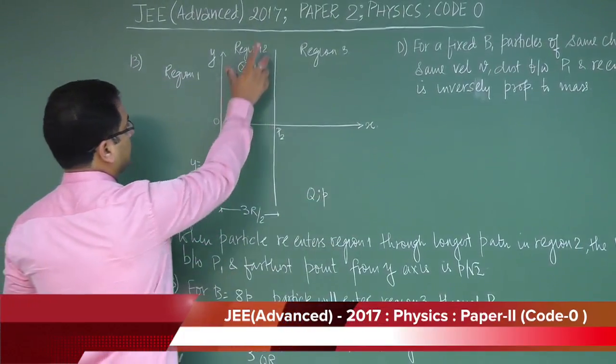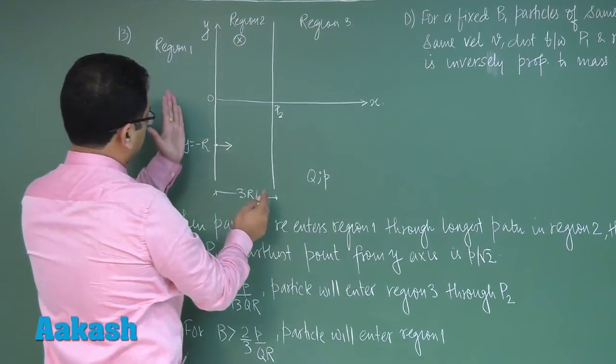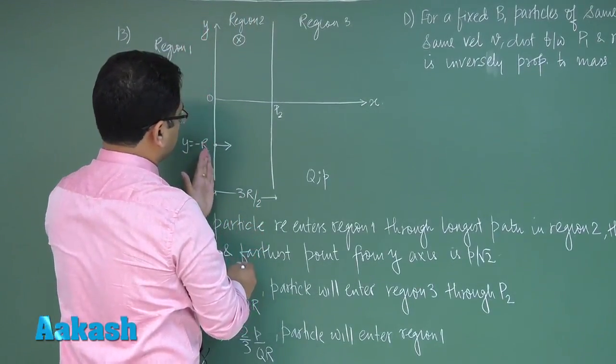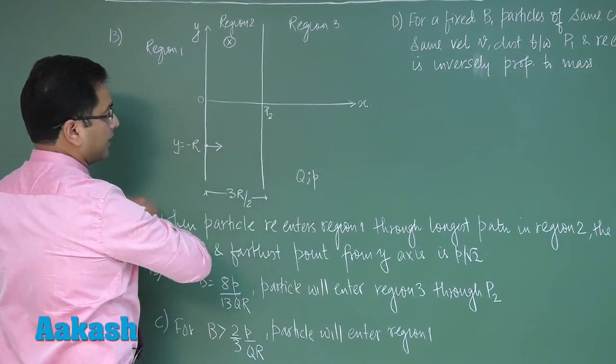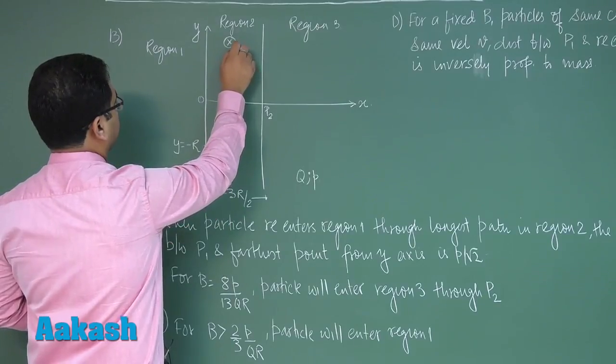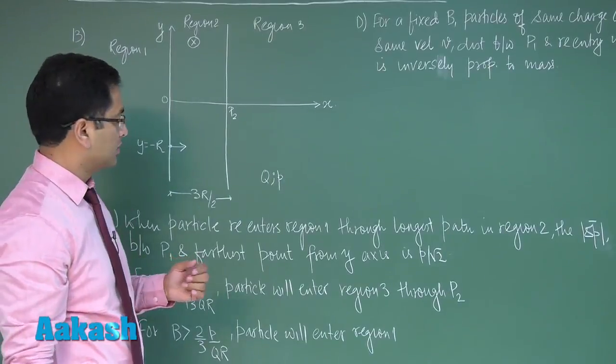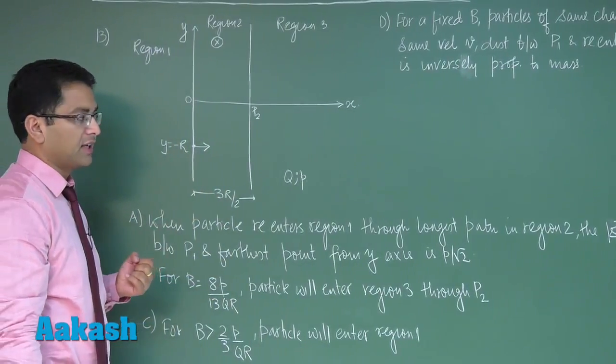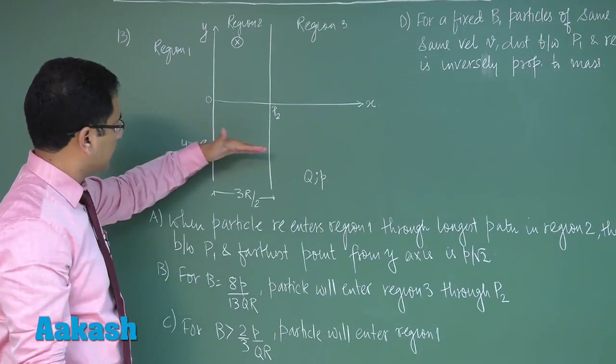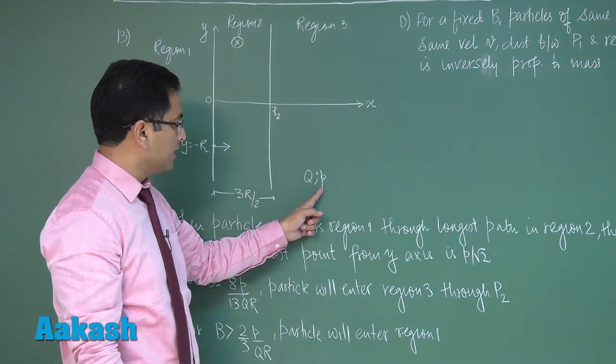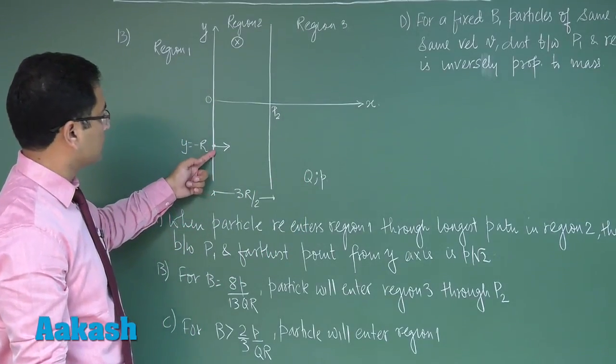This is region 1, this is region 2, and region 2 is from x equals 0 to x equals 3r by 2. In this region there is a uniform magnetic field B present. Region 3 has magnetic field again 0, so there is a limited magnetic field and a particle is projected with a momentum p and the charge of the particle is q.